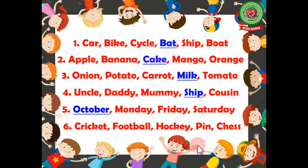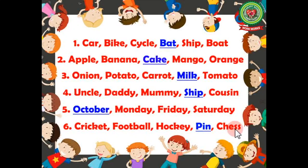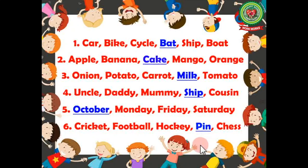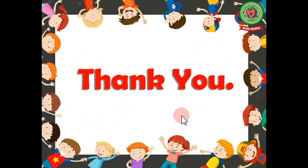Number six: cricket, football, hockey, pin, chess. The odd one is 'pin'. Cricket, football, hockey, and chess are names of games or sports, but pin is not a sport, so this is our answer. I hope you have understood both exercises today.